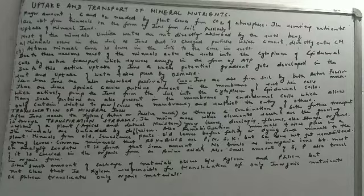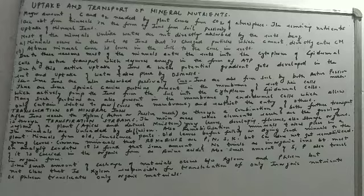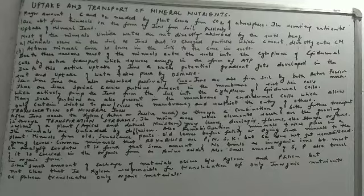After the ions reach the xylem — whether by active mechanism, passive mechanism, or a combination of both, with the help of dissolving in water — further transport is done through transpiration streams. Once it has reached the xylem, it will follow the same concept of transpiration pull. The main areas where elements are required are the growing areas of a plant: apical meristem, lateral meristems, young leaves, developing flowers, and storage organs.